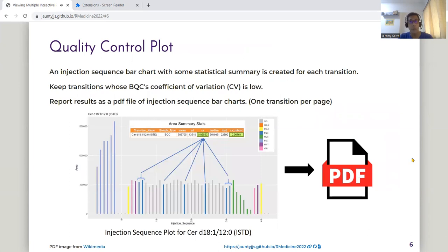We then plot this injection sequence bar chart using the area as the y-axis and the injection sequence as the x-axis. We then perform some statistical summary, and we want to keep transitions whose BQC coefficient of variation is low.